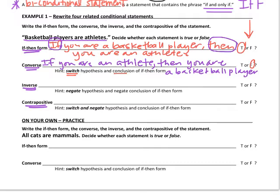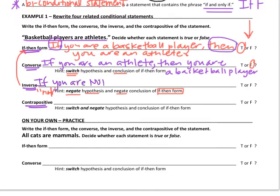Our next statement to write is the inverse. We want to negate the hypothesis and the conclusion of the if-then form, putting the word not in both parts. The word negate means not. So: if you are not a basketball player, then you are not an athlete.